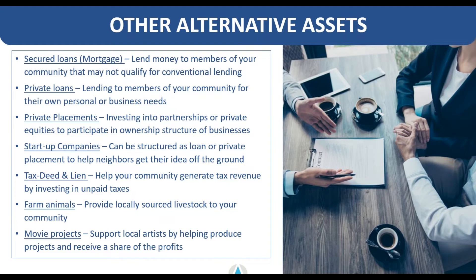Tax deeds and liens help your community generate tax revenue they're otherwise not getting from the property owner. You work to collect on the unpaid taxes and could ultimately end up owning a piece of property in your retirement account after simply acquiring a tax deed or lien for a few hundred or a few thousand dollars at auction. Owning farm animals can also be done within a retirement account — in a rural community you can make those investments with your retirement account to help provide locally sourced livestock or farming goods like fruits and vegetables through raw land or by investing into a farm.